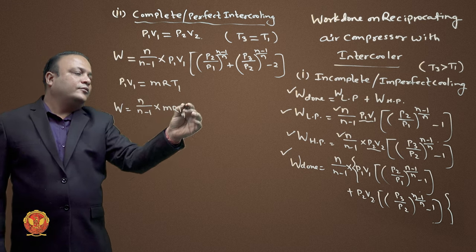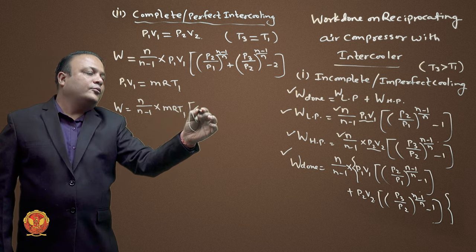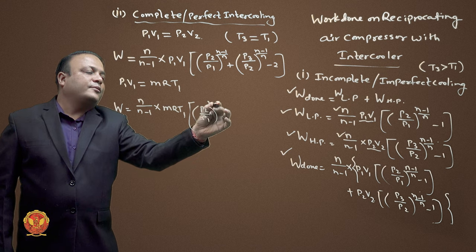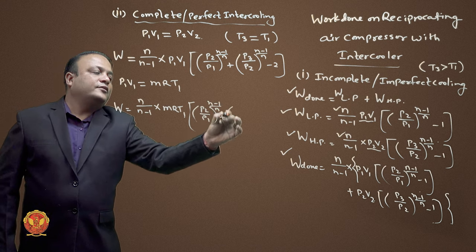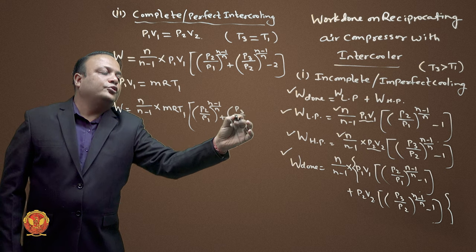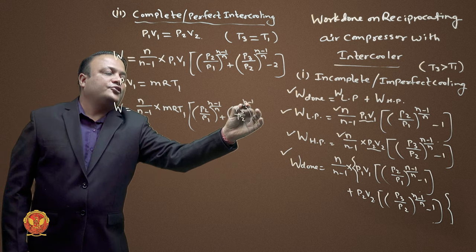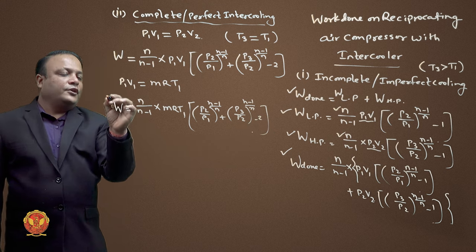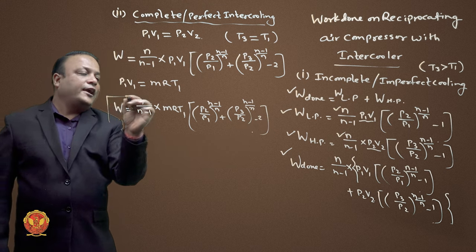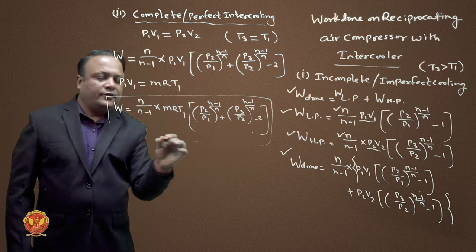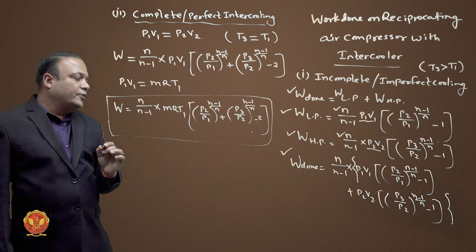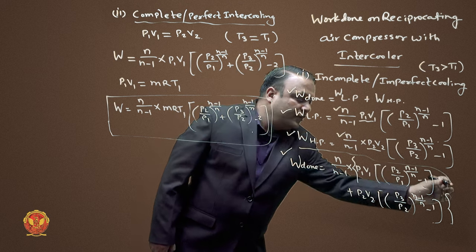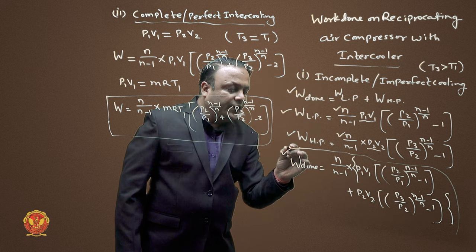So the modified work done formula is: N/(N-1) × MRT1 × [(P2/P1)^((N-1)/N) + (P3/P2)^((N-1)/N) − 2]. This is the work done for perfect intercooling, and the earlier expression was the work done for incomplete (imperfect) intercooling.